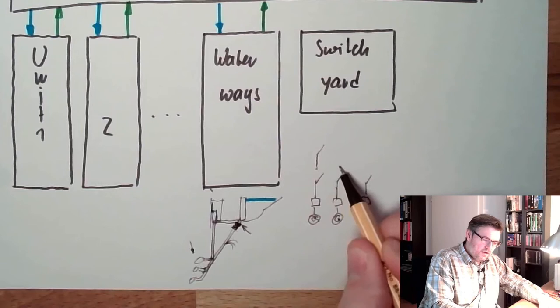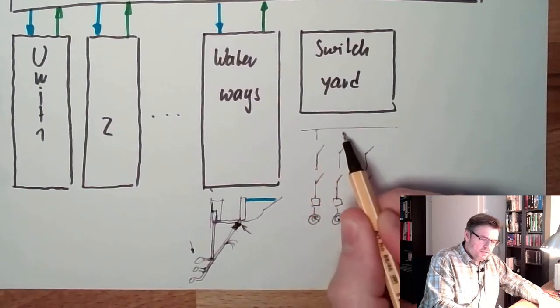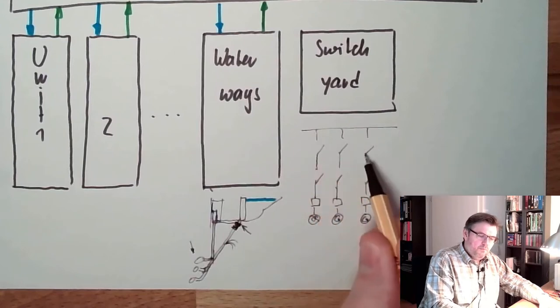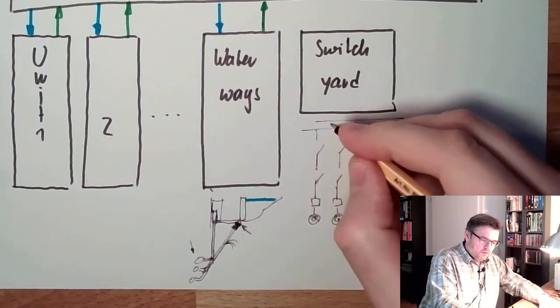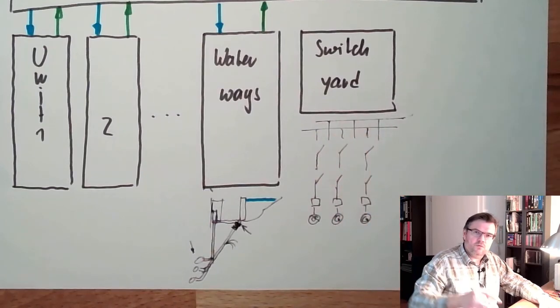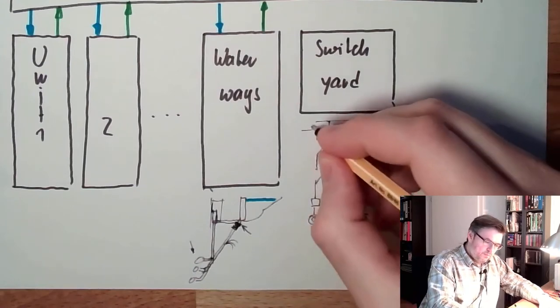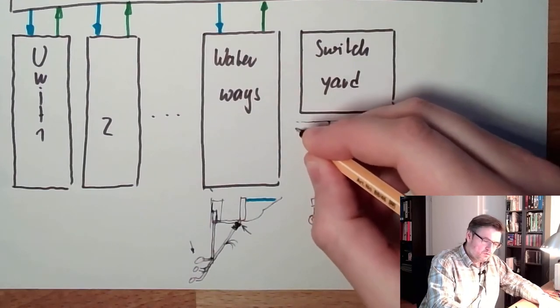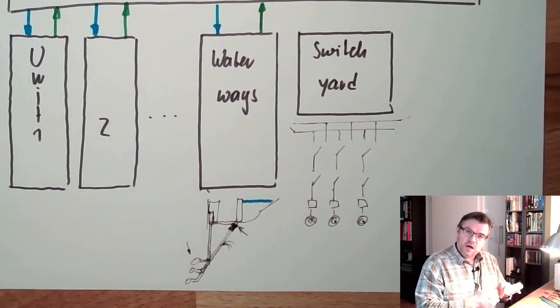And then the lines are connected, and then there are the disconnectors, and they might be connected to one bus bar. They're connected, there might be several bus bars, so we can select to which bus bar we are connecting. And one bus bar is going to Vienna, and the next bus bar is going to wherever, and the bus bar might be coupled here.